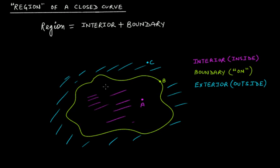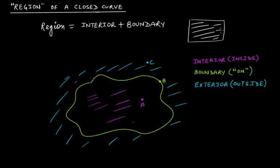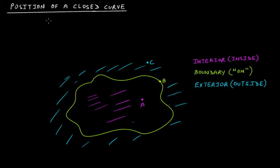You can apply this in the real world. For example, if you have a tennis court, and this is the boundary of the tennis court, then the region of this court will be the boundary plus the playground inside. This is what region means, and that's what we've learned about the position and region of a closed curve.